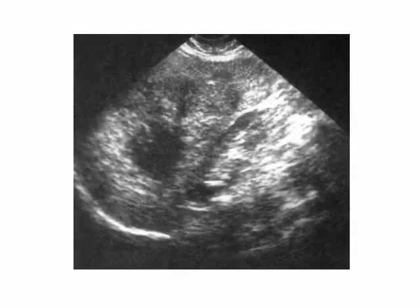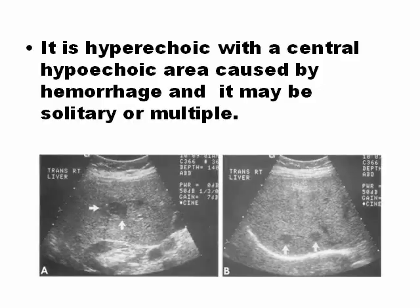You can see here an adenoma in the right lobe of the liver. It is hyperechoic with a central hypoechoic area caused by hemorrhage, and it may be solitary or multiple. It does not mean that all adenomas have this pattern, but it is common to have a hyperechoic lesion with a central hypoechoic area.